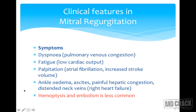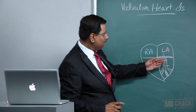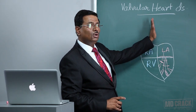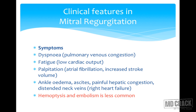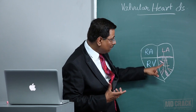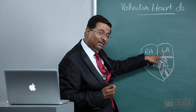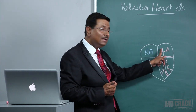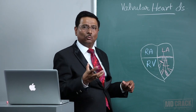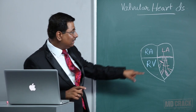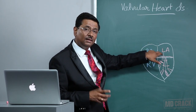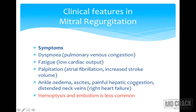Clinical features include dyspnea due to pulmonary venous congestion from volume overload in the left atrium. Fatigue occurs because of low cardiac output — in mitral regurgitation, some blood goes to the left atrium rather than the aorta, perceived as low cardiac output. There can be palpitations due to atrial fibrillation from increased stroke volume in the left atrium. Ankle edema, ascites, painful hepatic congestion, and distended neck veins are features of right-sided heart failure in severe cases.